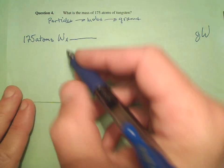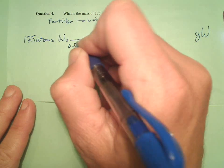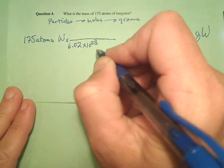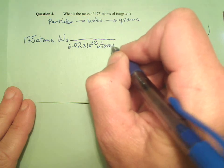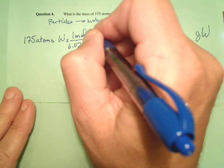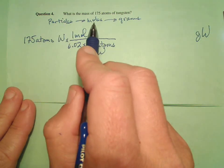So let's go ahead and do this. We know Avogadro's number, 6.02 times 10 to the 23rd atoms of tungsten. That's one mole of tungsten. So we've got our particles to moles.